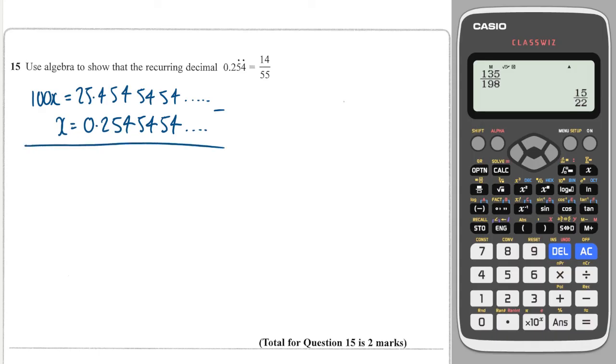I'm going to subtract. They should line up perfectly, which they do. So all of these cancel. And then here we get different digits. So we do 25.4 minus 0.2, and that gives me 25.2.